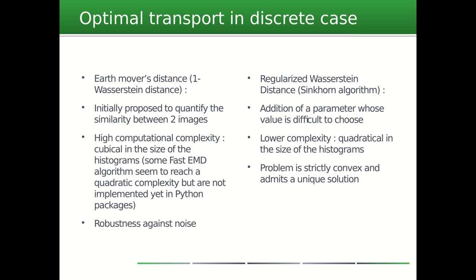With the modeling of colors in the form of 3D histograms, we find ourselves in the case where our two probability distributions are discrete. Two types of algorithms exist to handle this case: a synchron algorithm and Earth Mover's Distance. We finally chose the EMD, which, in spite of a longer computation time, seemed better adapted to the situation.